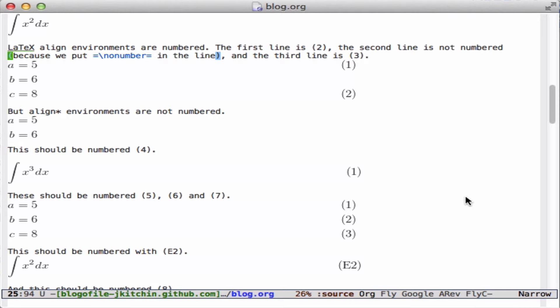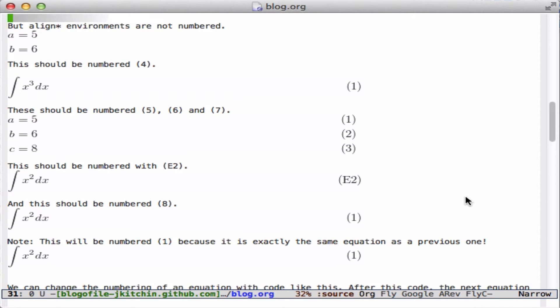You can't really refer easily to equation 1. So what we're going to do is look at a way to change this so that these are, say, numbered 4, 5, 6, 7, this would be 8, and so forth.